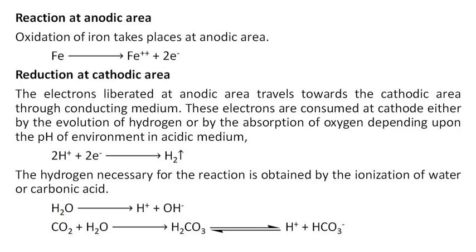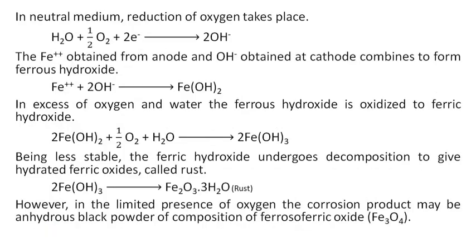These electrons are consumed at cathode either by the evolution of hydrogen or by the absorption of oxygen, depending upon the pH of the environment. In acidic medium, hydron takes two electrons to form hydrogen. The hydrogen necessary for the reaction is obtained by the ionization of water or carbonic acid.